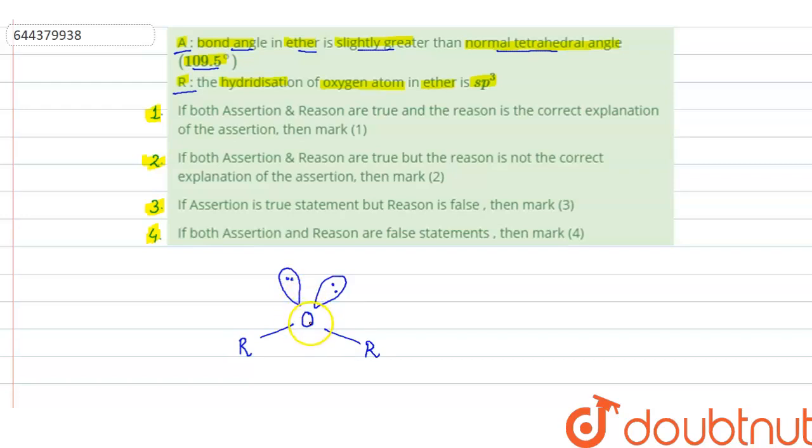For that we can calculate the steric number. Steric number equals number of lone pairs plus number of bond pairs. As you can see on oxygen we have two lone pairs, plus oxygen is making two bonds with two R groups. So bond pairs are also two.